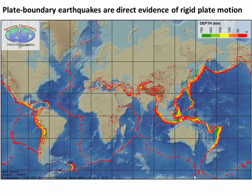If we look at a map of global earthquakes, this is another piece of direct evidence that rigid plates are moving past each other. We see a band of shallow earthquakes coming right down a mid-ocean spreading ridge. We see strips of deeper earthquakes associated with subduction zones. And some of these shallow earthquakes are also associated with strike-slip boundaries. Most importantly, these earthquakes literally delineate the edges of the plates — here's the African plate, here's the South American plate, and the Eurasian plate, all bounded by these earthquakes on their edges.